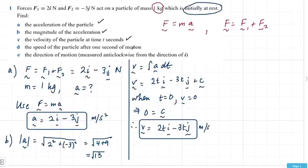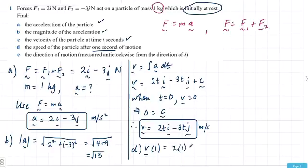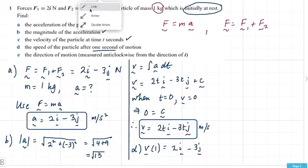We've now done those three parts. What is the speed of the particle after one second of motion? Step one: find what's happening at one second — that gives 2 times 1, which is 2i, and 3 times 1 is 3j. So that's the velocity at time equals 1.